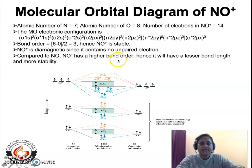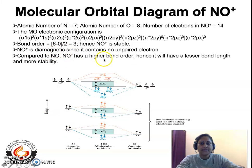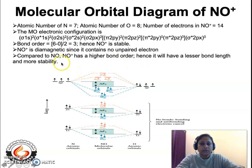Compared to NO, NO+ has a higher bond order: NO has a bond order of 2.5, while NO+ has a bond order of 3. Since a molecule with a higher bond order has a shorter bond length, NO has a higher bond length whereas NO+ has a shorter bond length and is hence more stable.